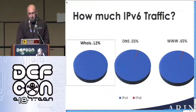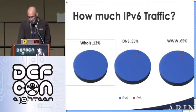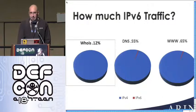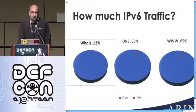So how much V6 traffic do we see? We don't see a whole lot. There is some red on these graphs — I promise. We get a lot of traffic; ARIN is about 50 employees but we get many hundreds of megabits of DNS traffic, for instance. So half a percent of DNS traffic over V6 is actually really good.